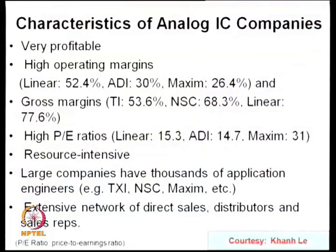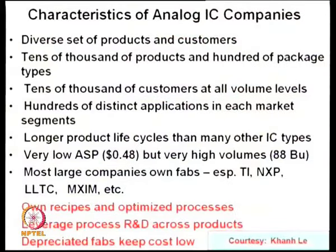Companies must be resource-intensive and have diverse products, tens of thousands of customers, hundreds of distinct applications per market segment, larger product life cycles than other IC types, very low ASPs but very high volumes. Larger companies like TI, NXP, Linear, and Maxim have the advantage of their own proprietary processes optimized for their products, leveraging process R&D across the product range — just as Intel manufactures its own microprocessors to leverage that advantage.